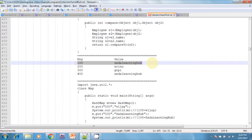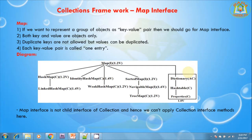Map interface is not a child interface of Collection, and hence we cannot apply Collection interface methods here. Map interface defines specific methods. The put method takes two object arguments and is used to add an entry to the map. If a key is already available, the old value is replaced with the new value and the old value is returned.